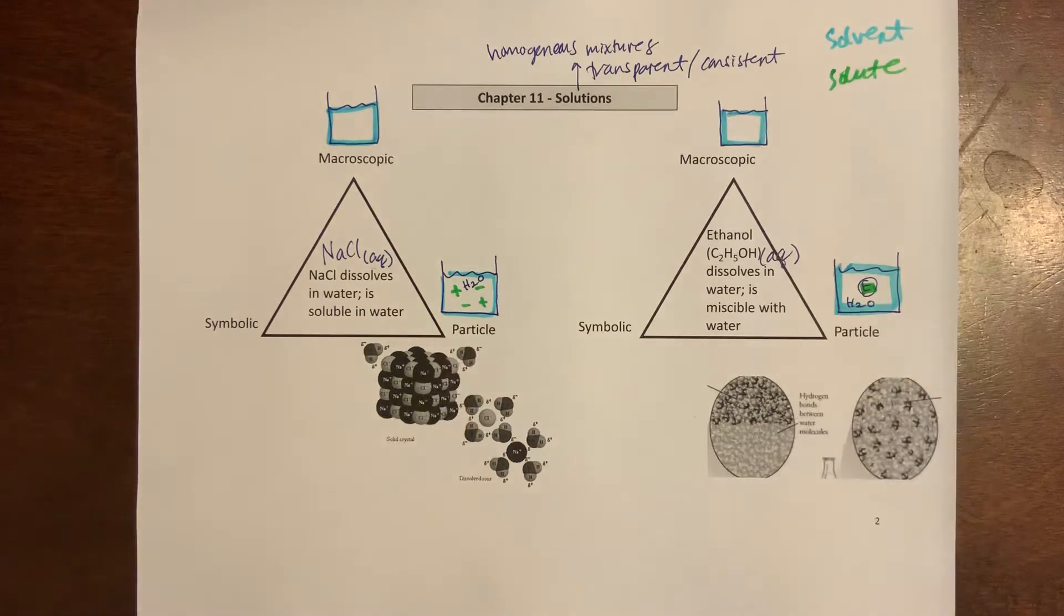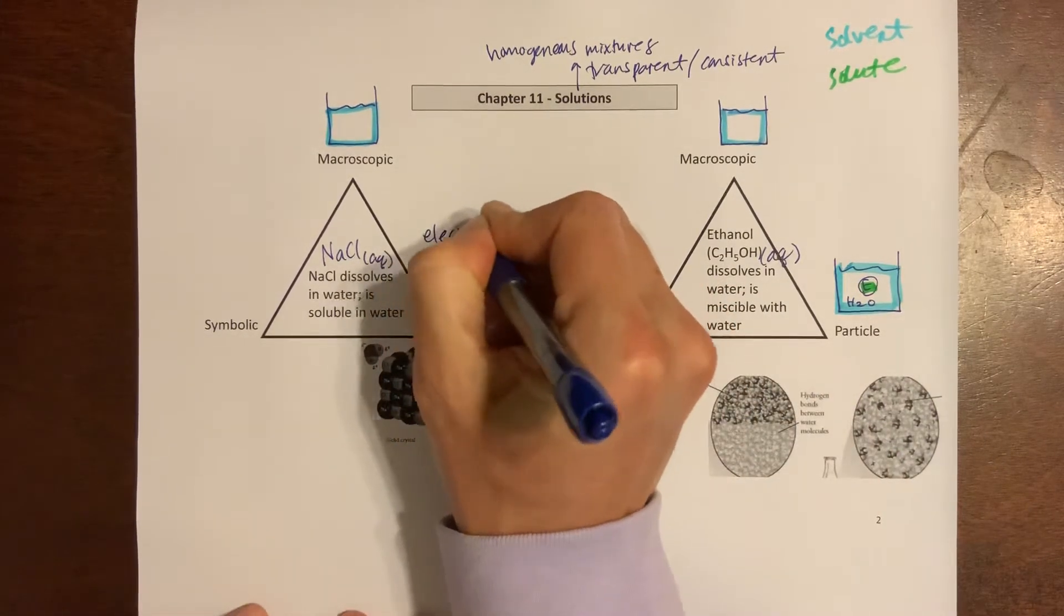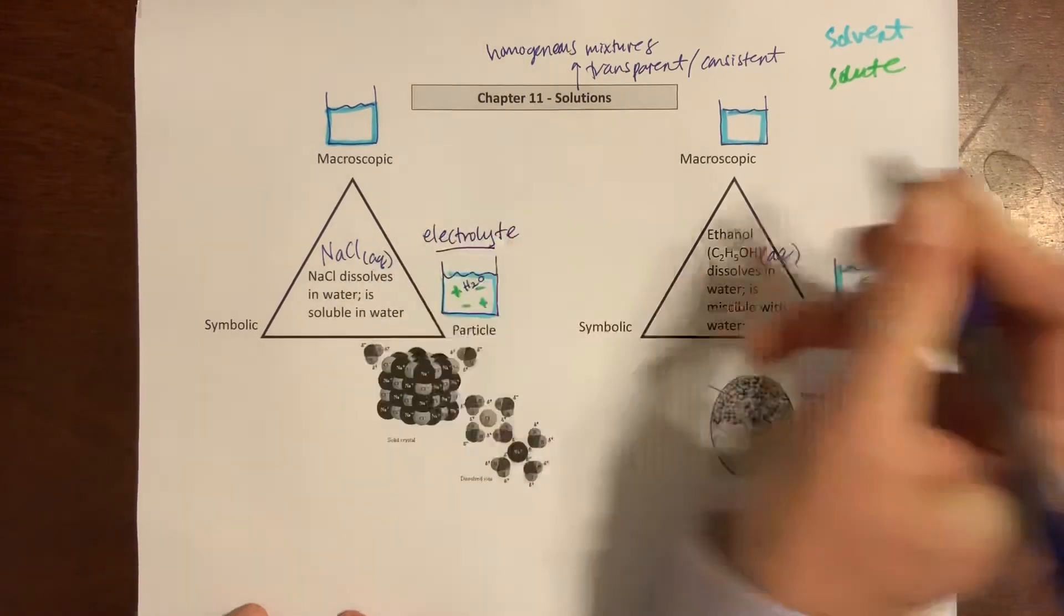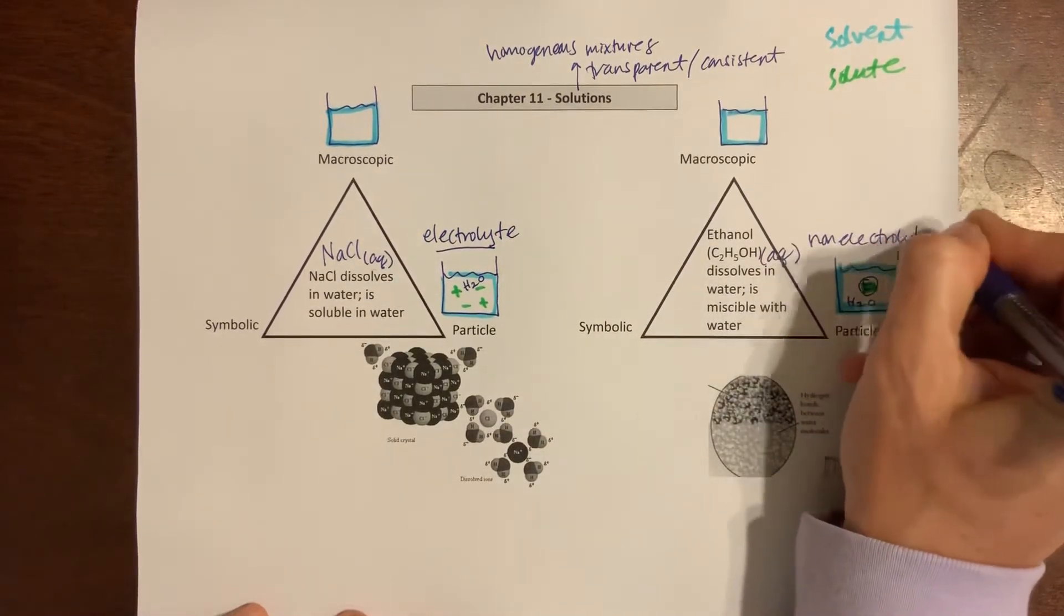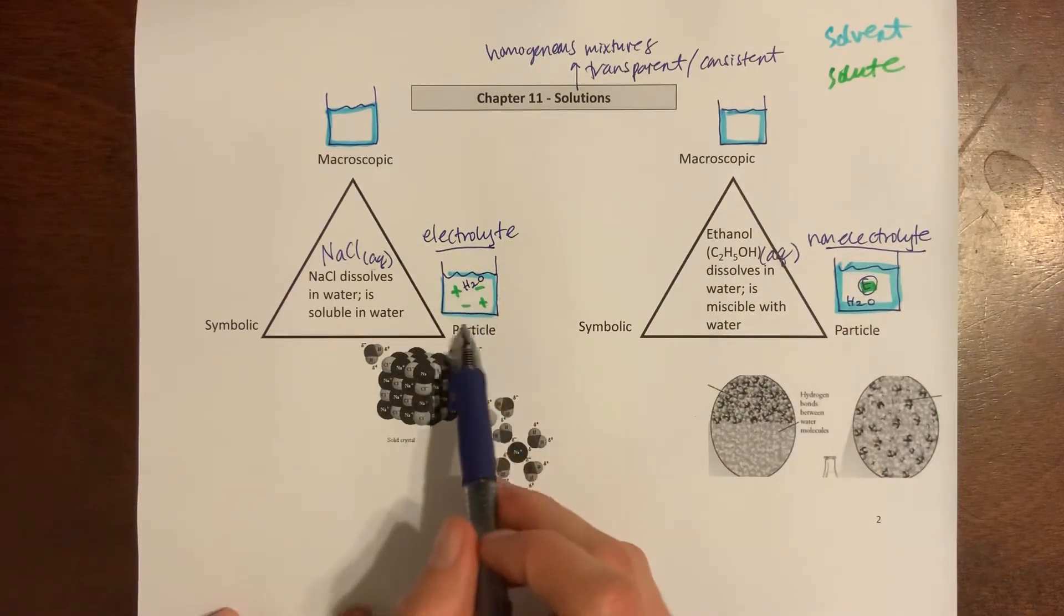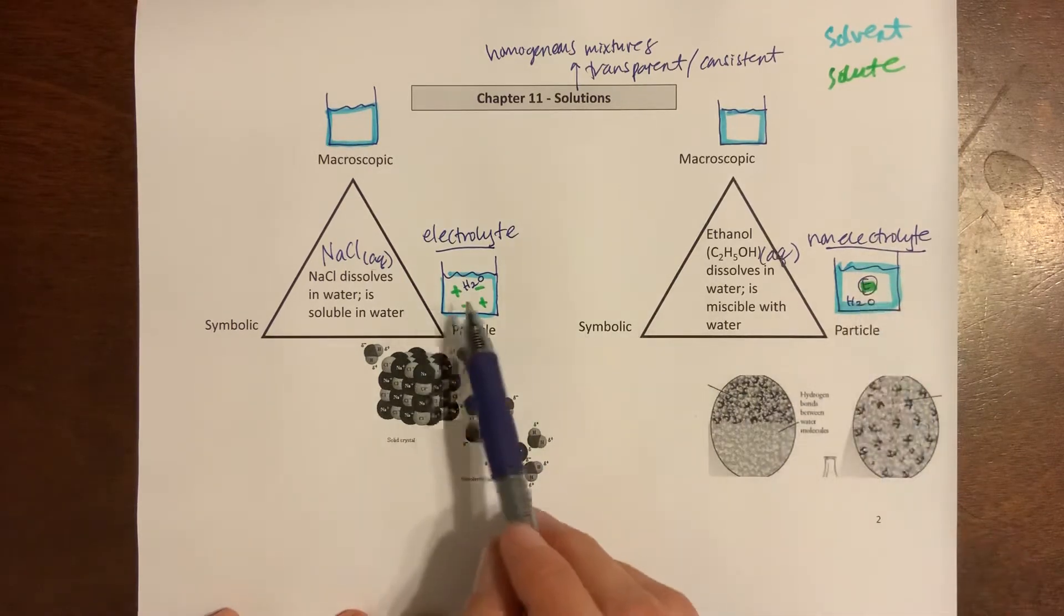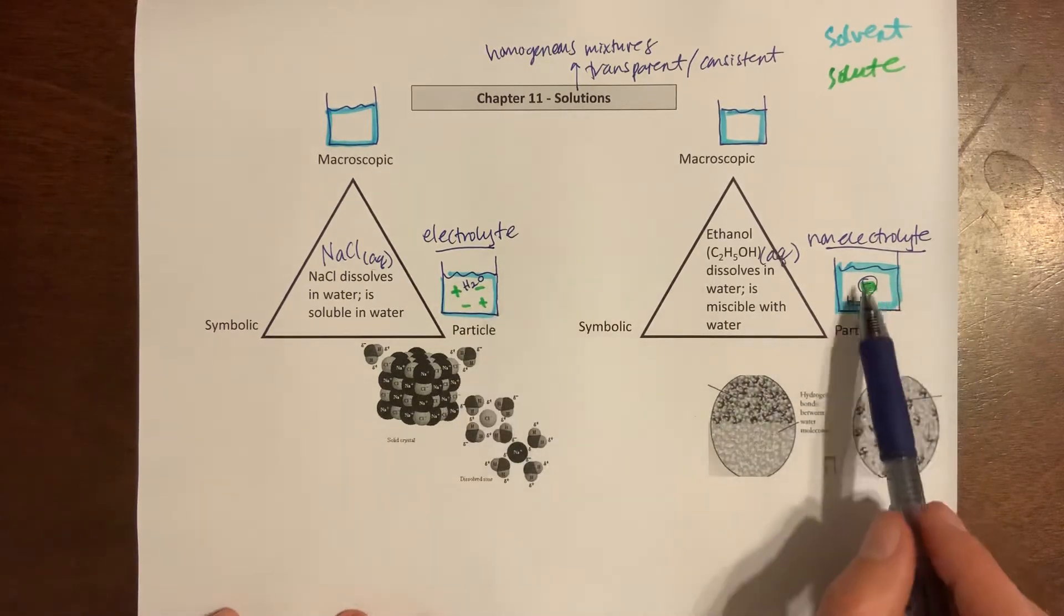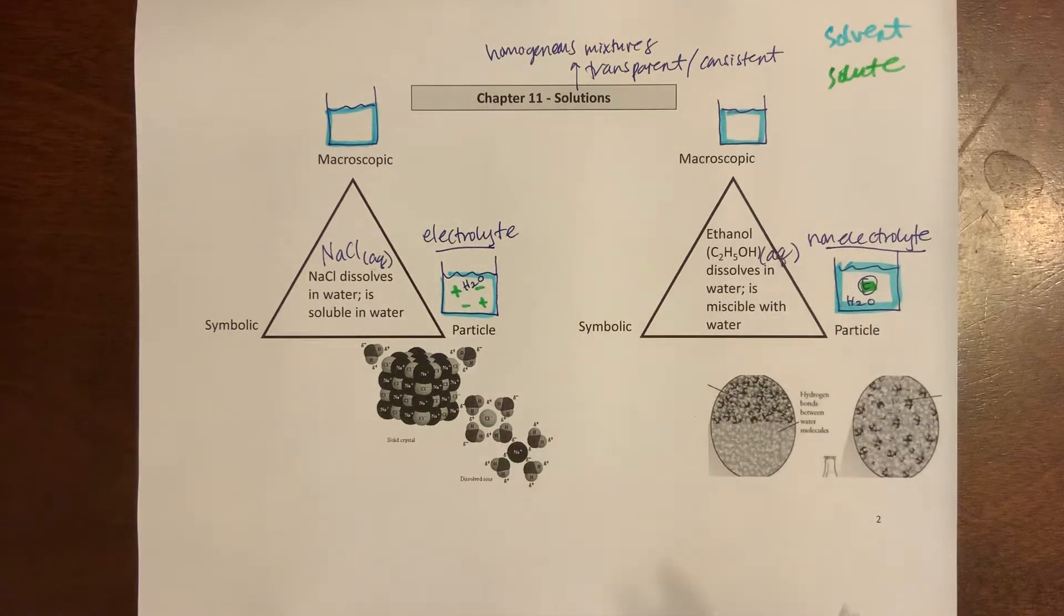We have words for that. This is called an electrolyte solution and this ethanol would be called a non-electrolyte. Electrolyte means I have mobile charges, mobile ions dissolved, and a non-electrolyte does not have those mobile ions. This will conduct electricity, this will not.